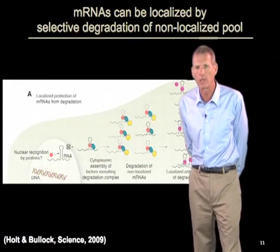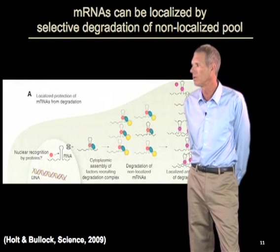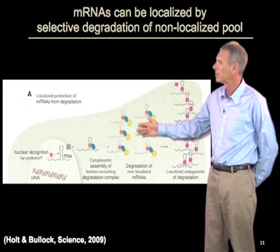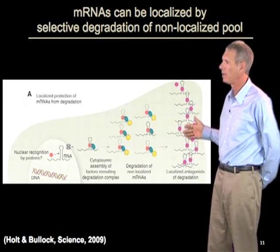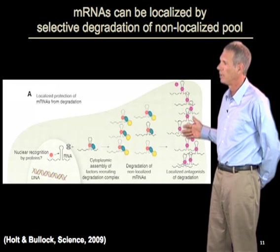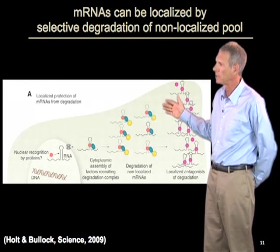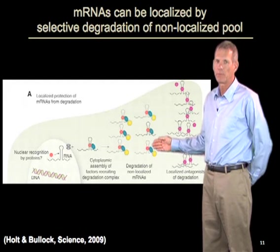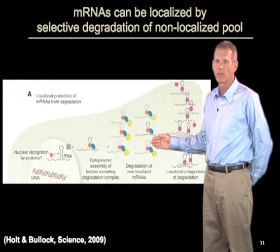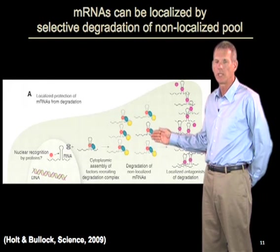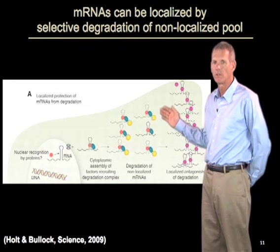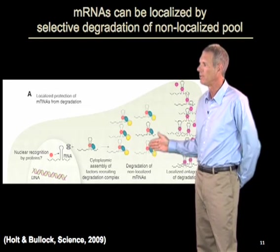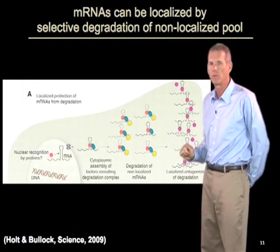mRNAs can also be localized by selective degradation of the non-localized pool. mRNAs can start out distributed throughout the cell, but RNAs which are not in a specific location can be preferentially degraded. One example is the nanos mRNA, which is localized to the posterior tip of Drosophila embryos. It is distributed throughout the cell but then degraded in the regions that are not at the posterior pole.